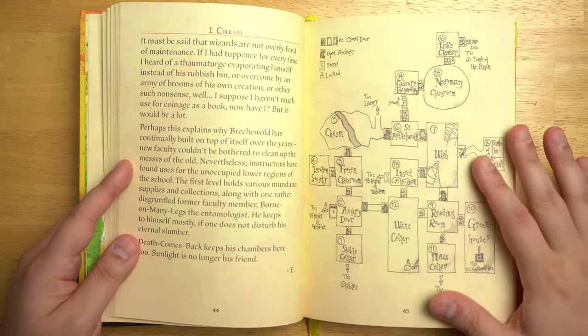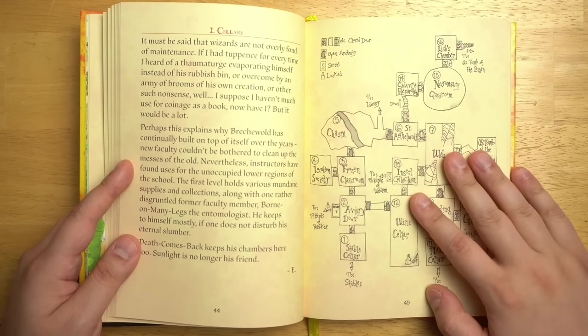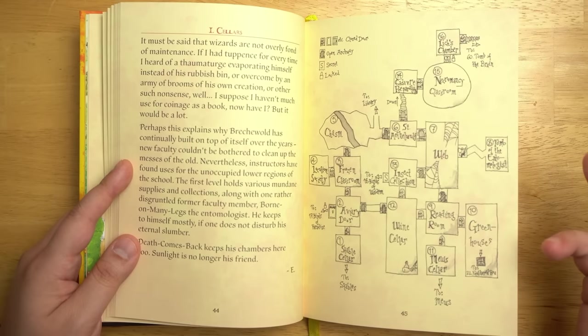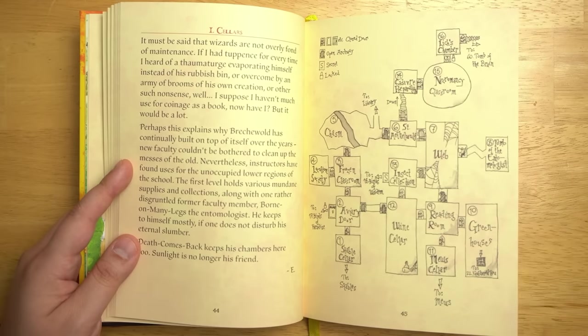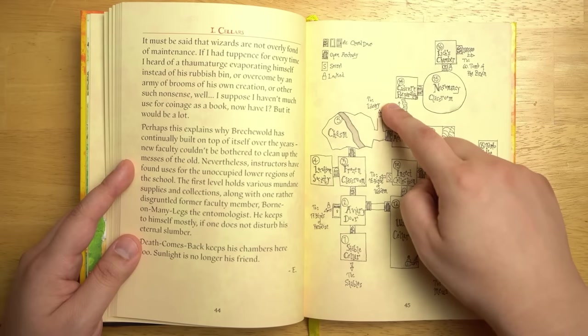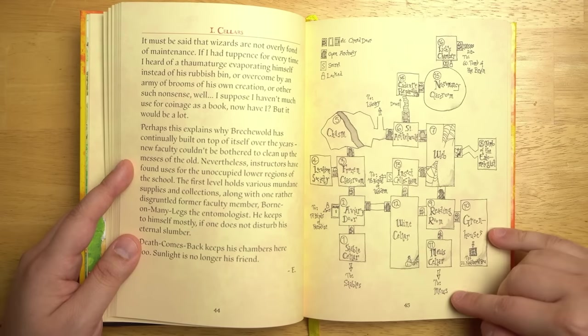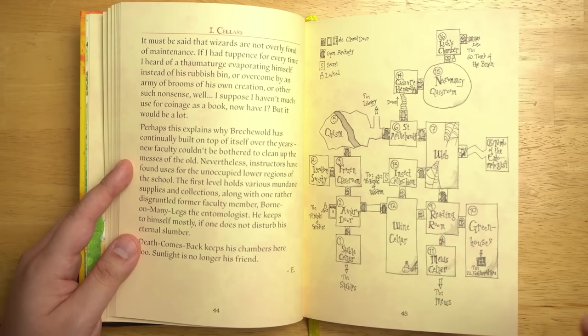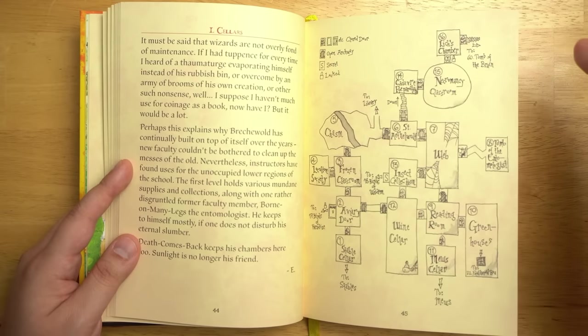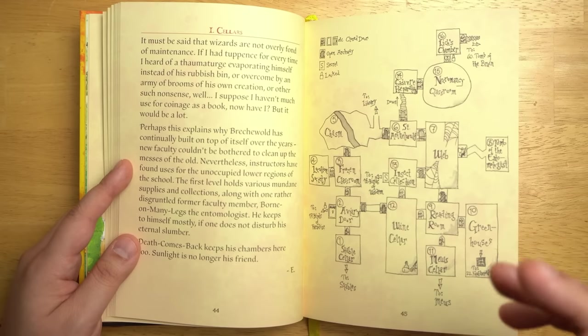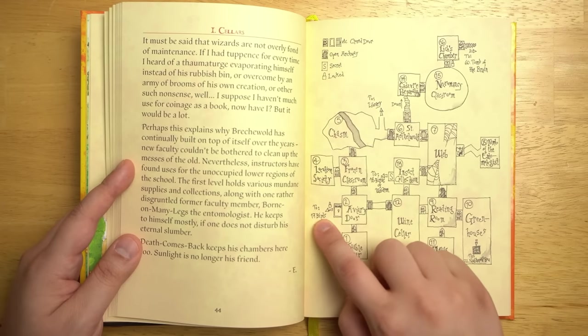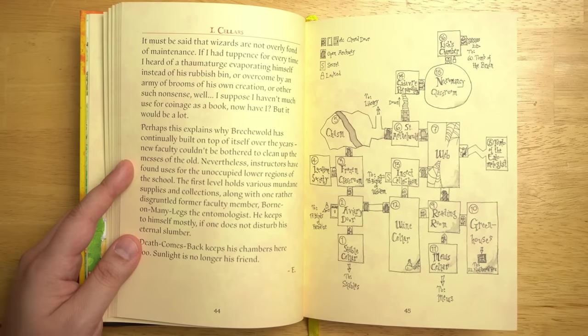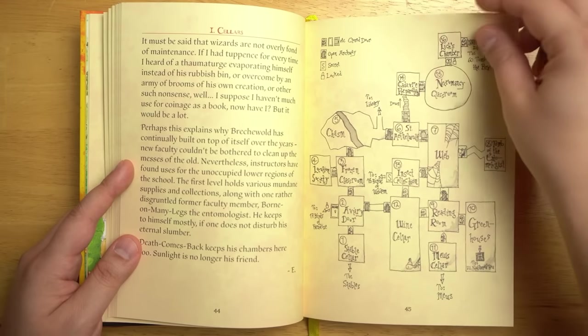One thing that confused me for quite a while while I was reading this book is this is the first level of the dungeon. Where is the entrance? Because it's never really spelled out. Eventually, I think I figured out that each of these places, like it says to the library, to the stables, to the muse, these are all different parts of the castle above. So I guess you could start at any of these places that link to part of the actual castle. If it says to like to birds of paradise, there's a 17 there. That means it's a dungeon room. So that's not an actual entrance. I just wish that was a little bit more clear.